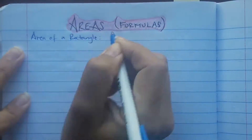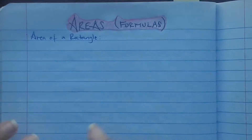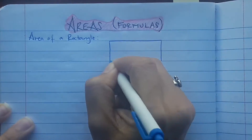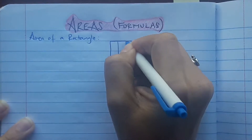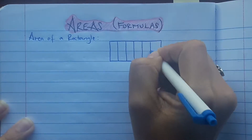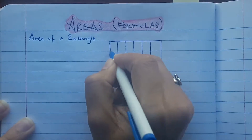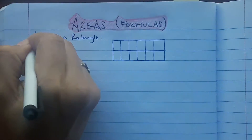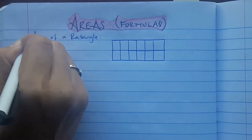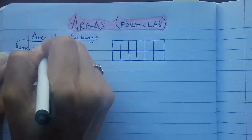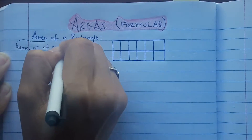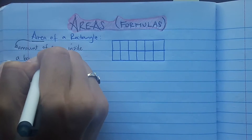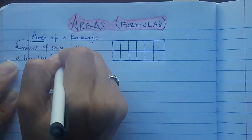Start off with the area of a rectangle. Go ahead and draw a rectangle and break it up into equal pieces as much as you can. So what does area mean? Area is the amount of space inside a boundary — a two-dimensional boundary.